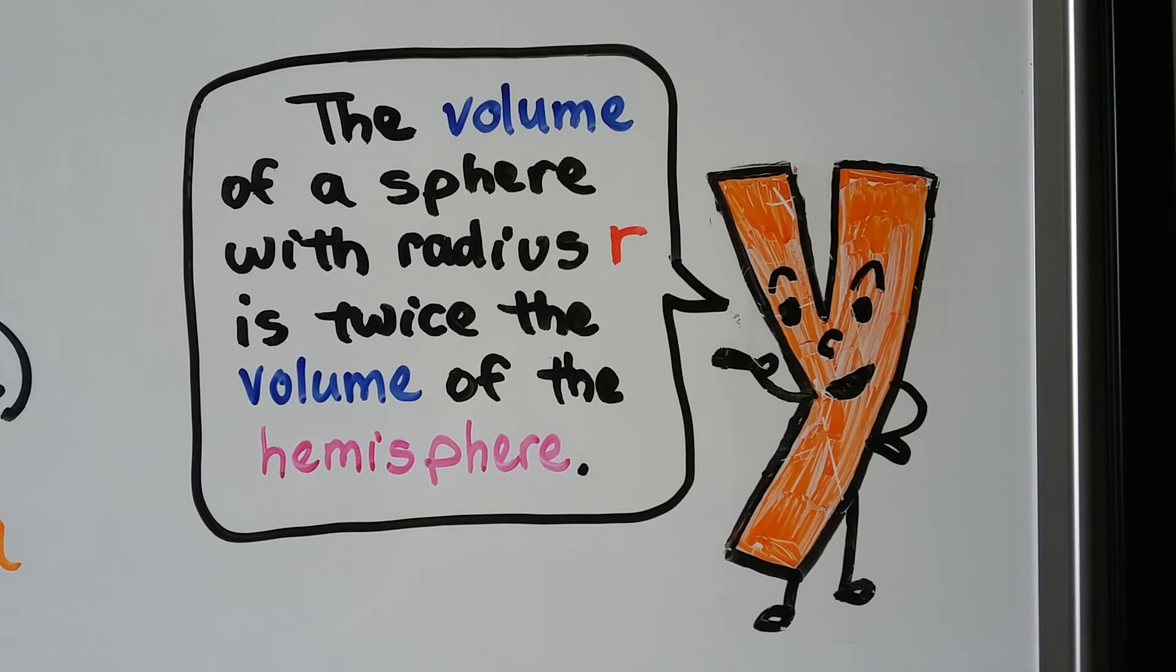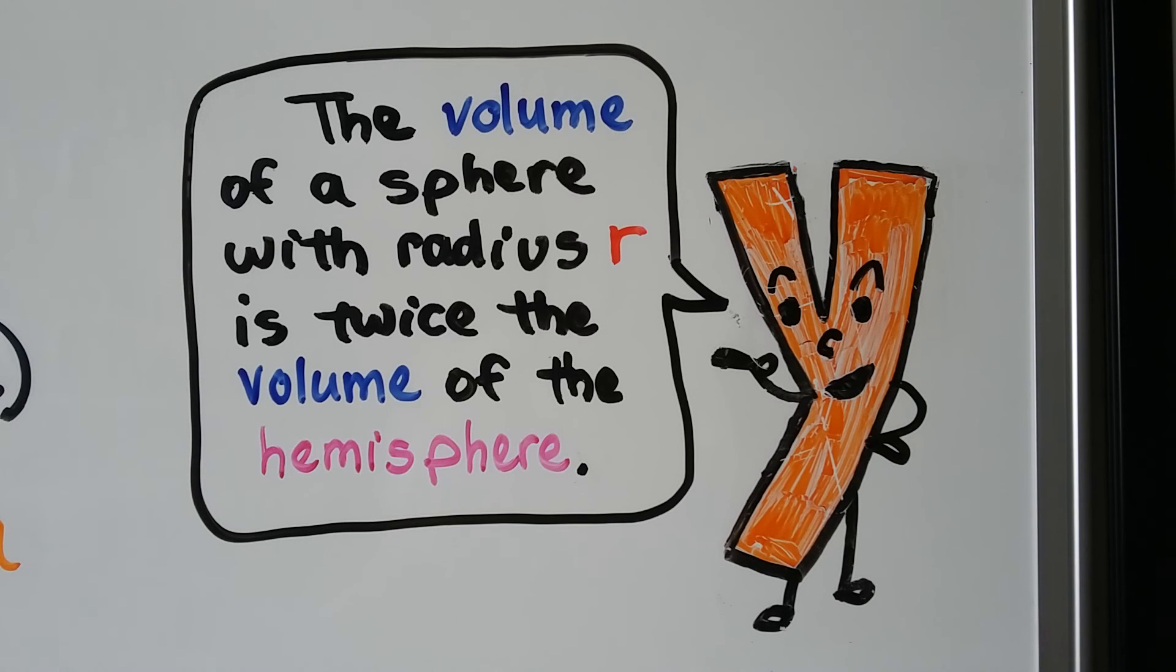So, just remember the volume of a sphere with radius r is twice the volume of a hemisphere, because two hemispheres make a sphere.